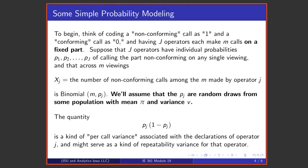So here's some simple probability modeling. To begin with, think of coding a non-conforming evaluation of an object as a 1 and a conforming evaluation of an object as a 0.